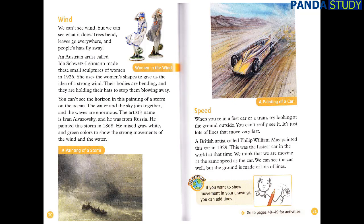When you're in a fast car or a train, try looking at the ground outside — you can't really see it, it's just lots of lines that move very fast. A British artist called Philip William May painted this car in 1929. This was the fastest car in the world at that time. We think that we are moving at the same speed as the car. We can see the car well, but the ground is made of lots of lines. If you want to show movement in your drawings, you can add lines.